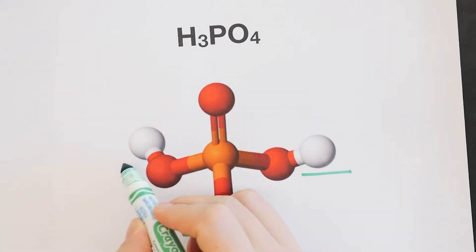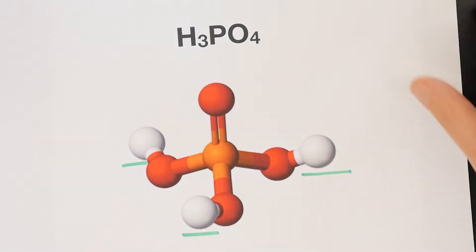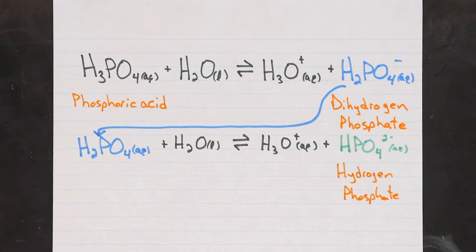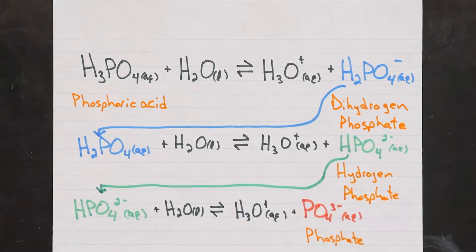Phosphoric acid actually has three different protons it can give up as an acid. First, it loses a proton to become dihydrogen phosphate, then another to become just hydrogen phosphate, and then another to become just phosphate.